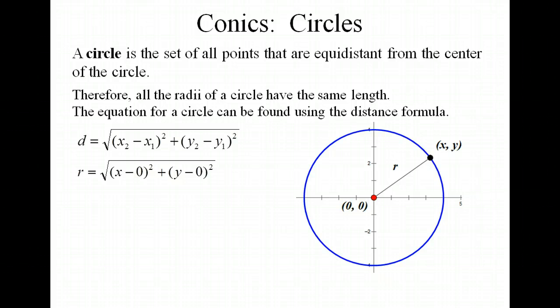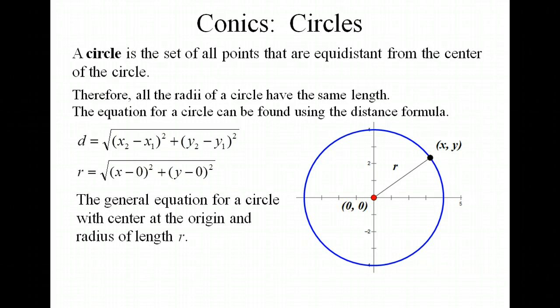So we get an equation for the circle as r equals the square root of x squared plus y squared. And then we're just going to square both sides of that equation. So we get r² = x² + y². So this is the general equation for a circle that has a center at (0, 0).